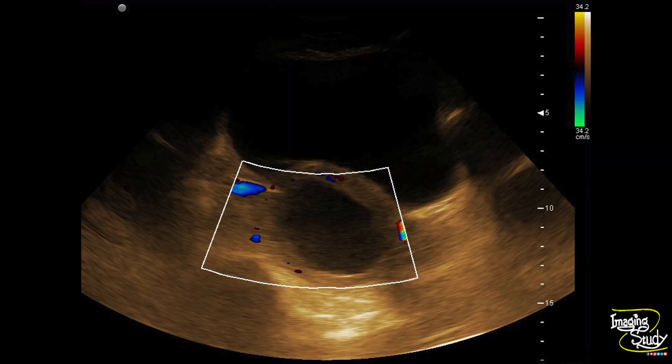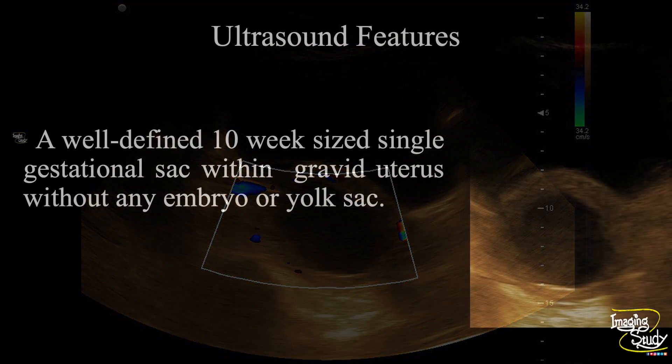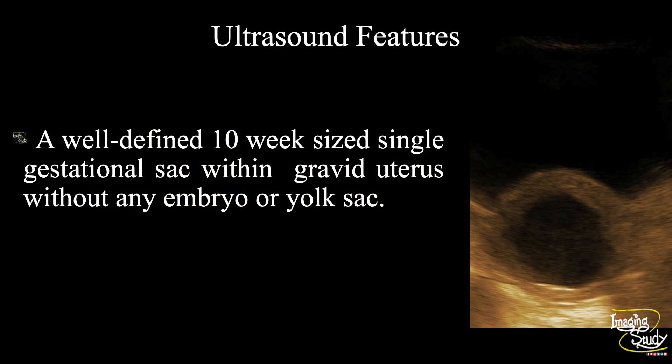This is the picture of the gestational sac without any internal embryo. In summary, a well-defined irregular 10-week sized gestational sac is noted within a gravid uterus without any embryo or yolk sac. So the diagnosis is an anembryonic pregnancy, or blighted ovum.